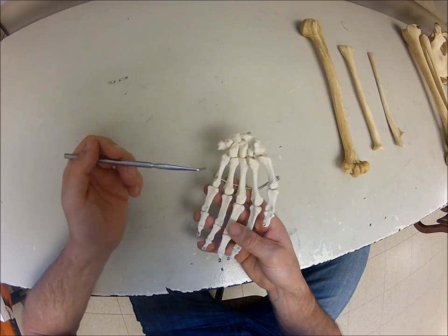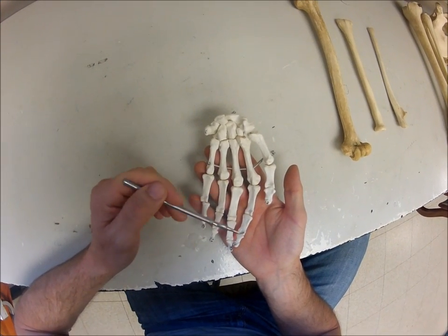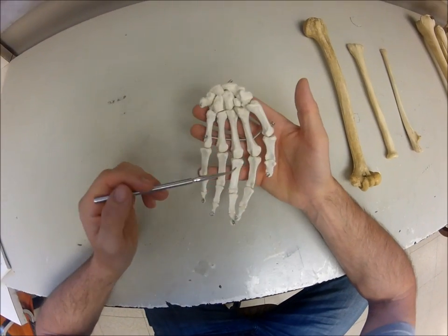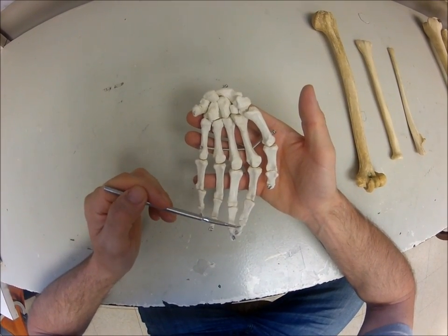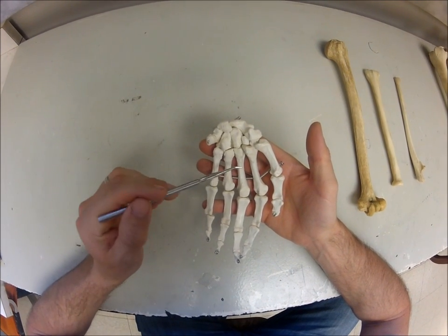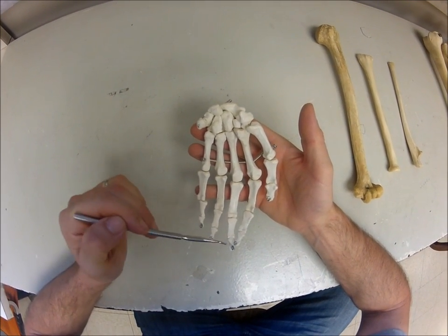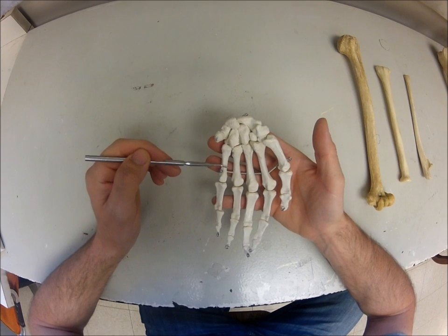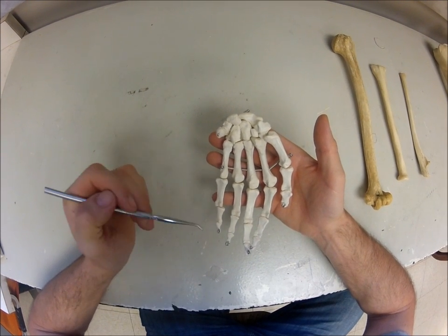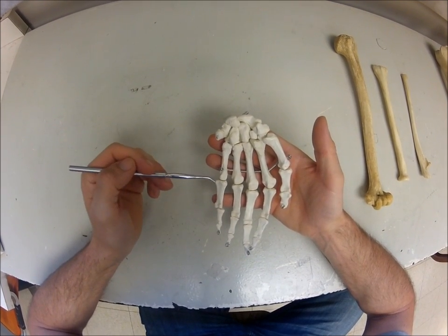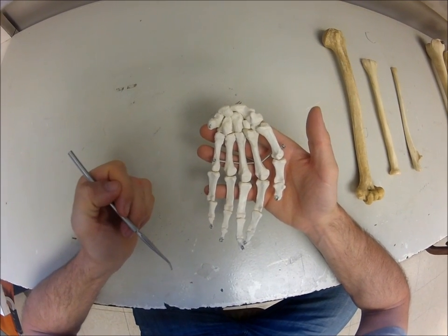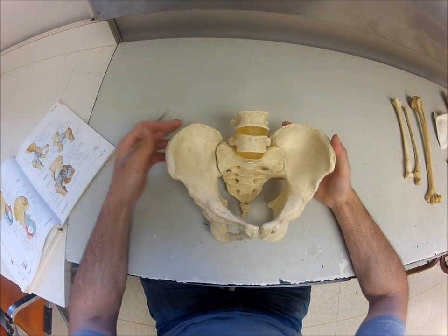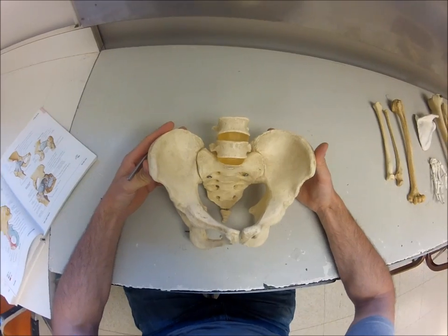Moving down, we have the metacarpals — first through fifth, with the first going to the thumb and the fifth going to the little finger. Beyond that are the phalanges. The thumb has just a proximal and a distal phalange, while each finger has a proximal, middle, and distal phalange. For both the metacarpals and phalanges, the proximal end is called the base, the middle is the shaft, and the distal end is the head.